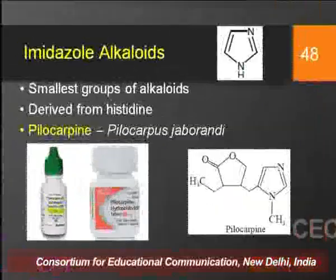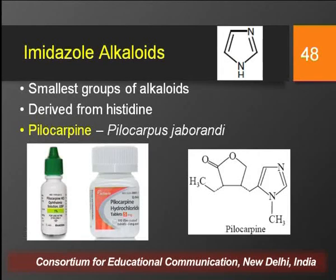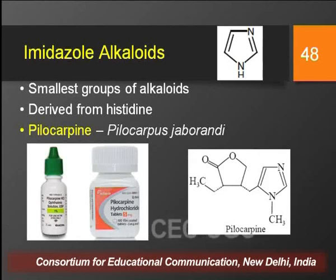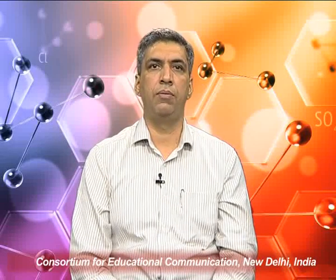Imidazole alkaloids have an imidazole ring in their structure and are considered the smallest group of alkaloids. They are derived from the amino acid histidine. The most common example is pilocarpine, obtained from the leaves of Pilocarpus jaborandi. Pilocarpine is largely used for ophthalmic purposes — pilocarpine eye drops are used to reduce ocular pressure in glaucoma, and pilocarpine hydrochloride tablets are used to overcome dry mouth in patients undergoing cancer therapy.